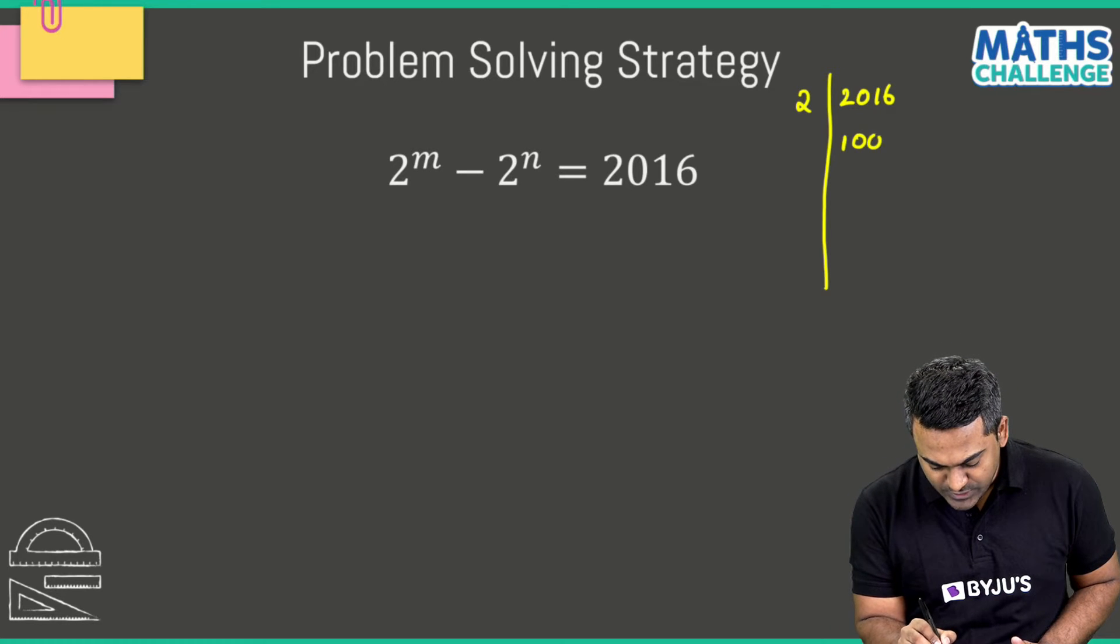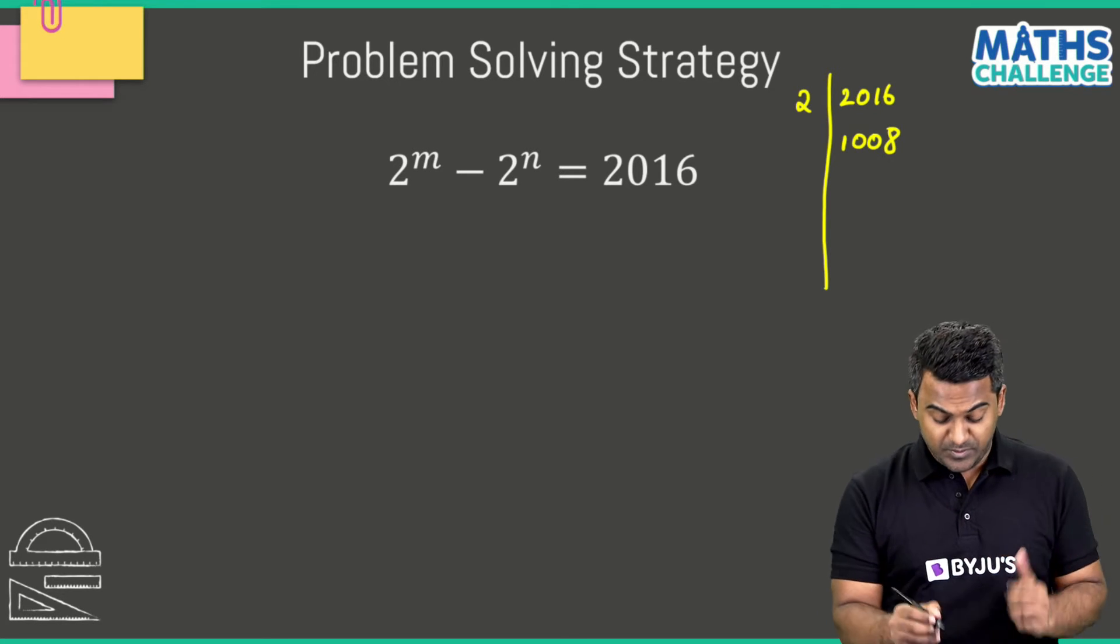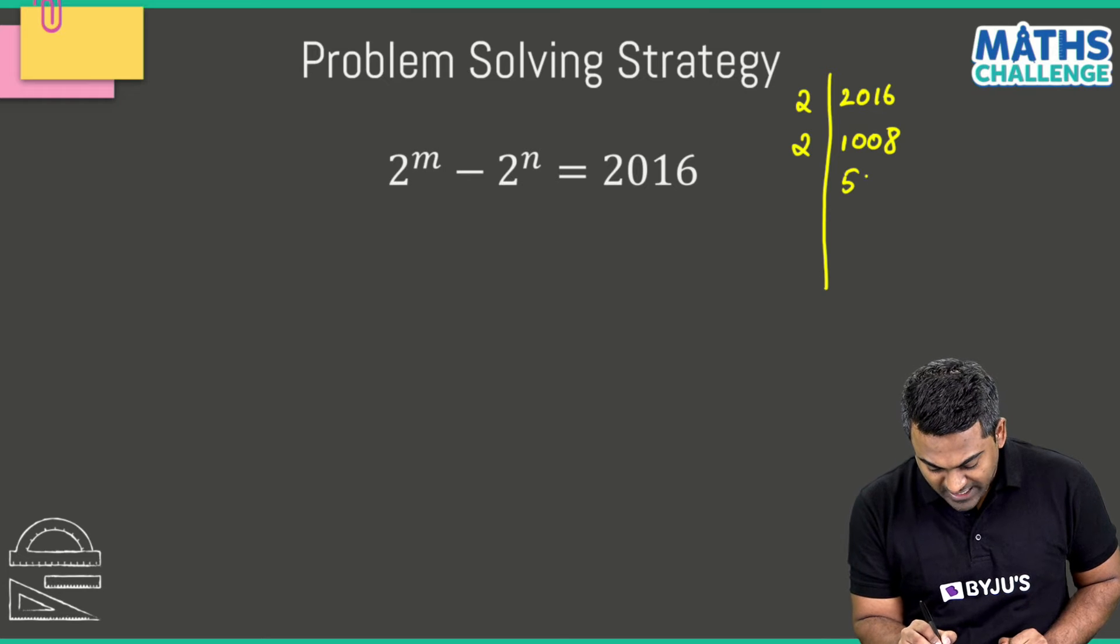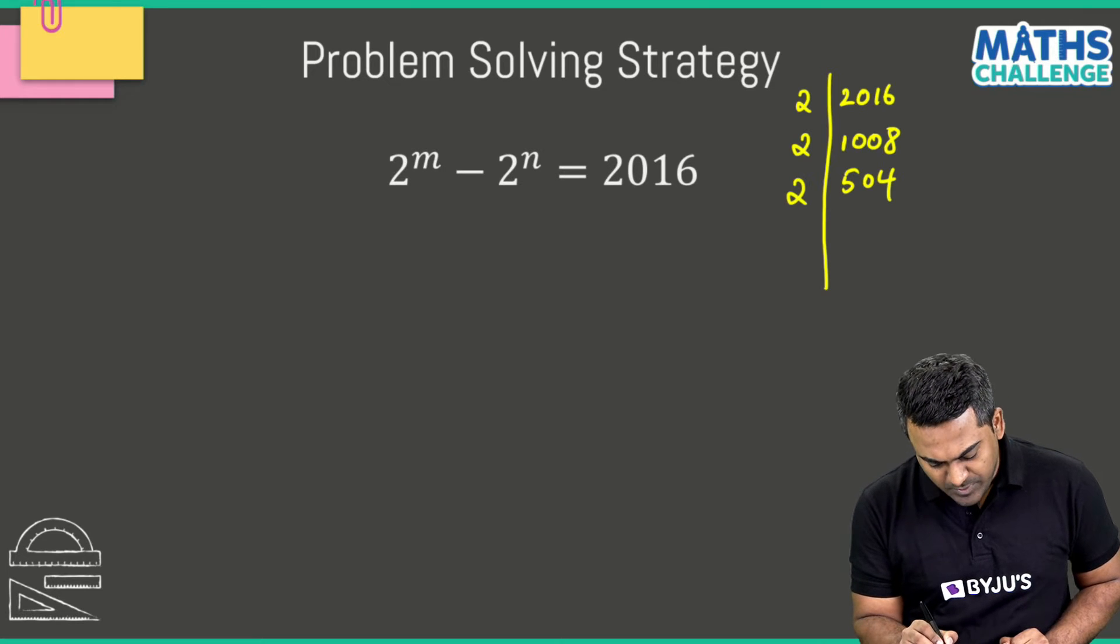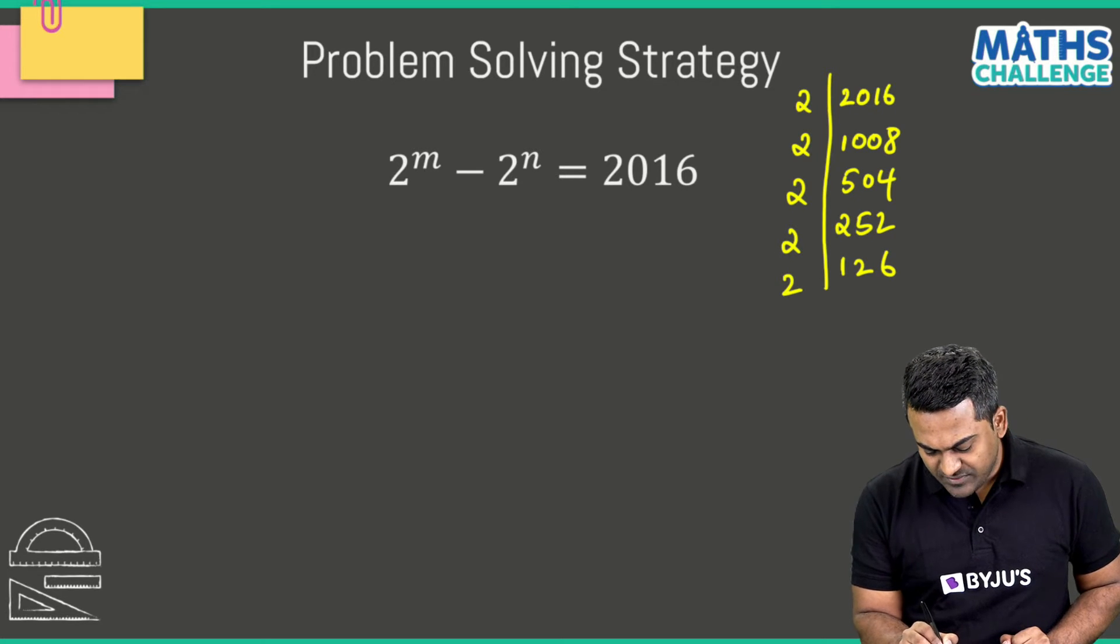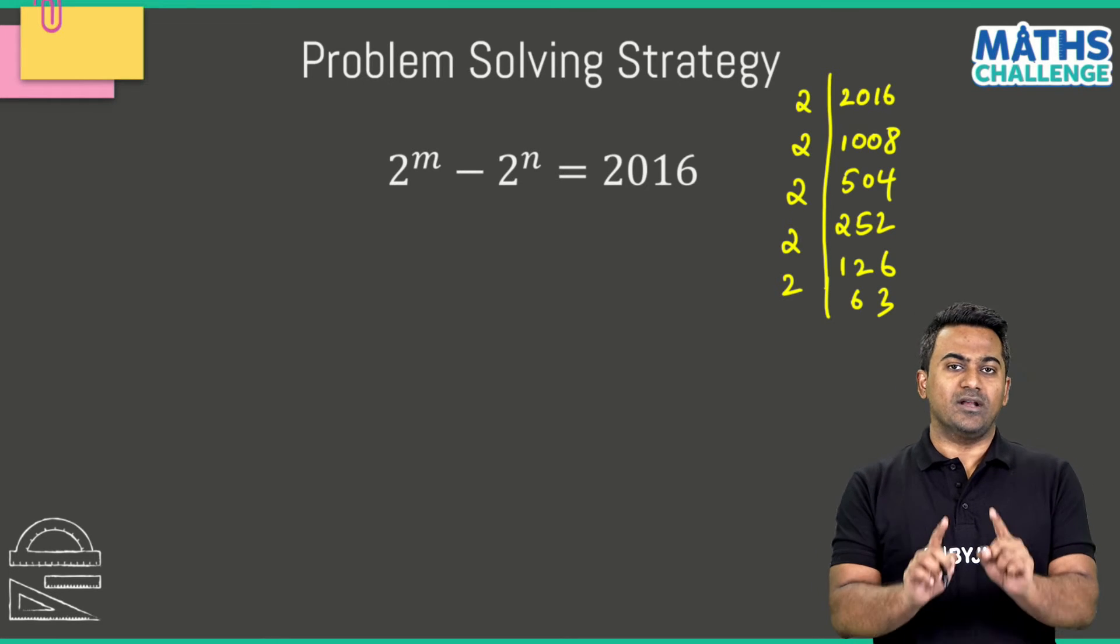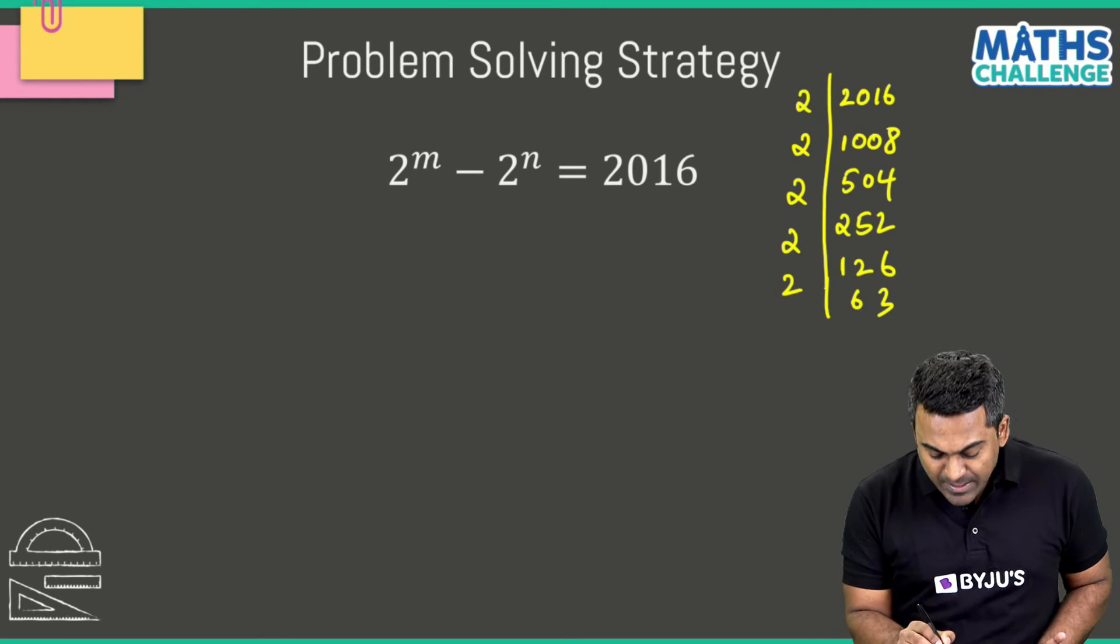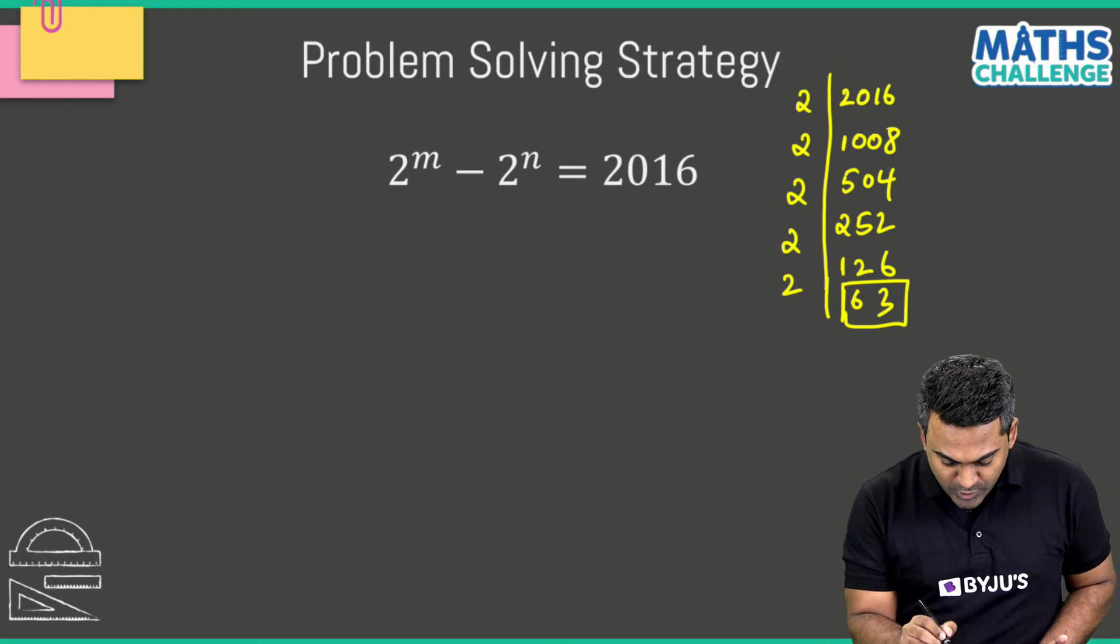So we're all familiar as to how we're going to do this, right? So 2016, let's start by dividing with the first prime number 2, and what we get is 1008. Now this again is divisible by 2, so this is going to be 504. This is again divisible by 2, this is going to be 252. And this is going to be 2 times 126.